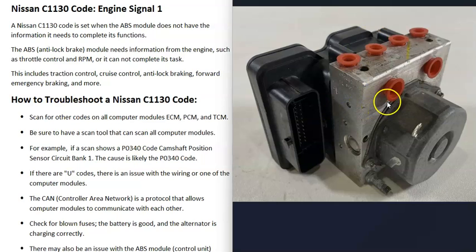It calculates all this information and works with this actuator to help control the vehicle with things like traction control, cruise control, anti-lock braking, forward emergency braking and different things like this. When you get a C1130 code, for some reason this ABS computer module doesn't have all the information it needs to do the calculations.